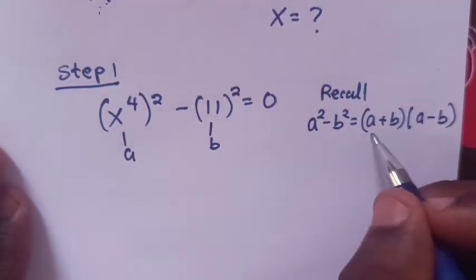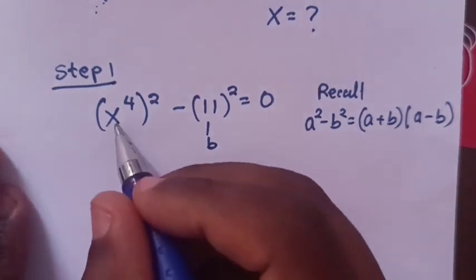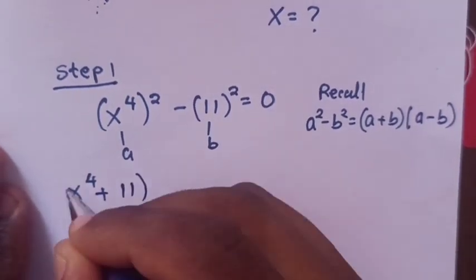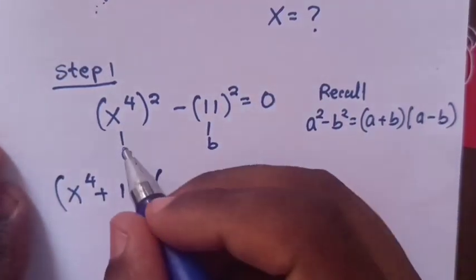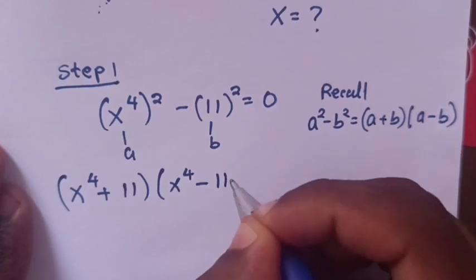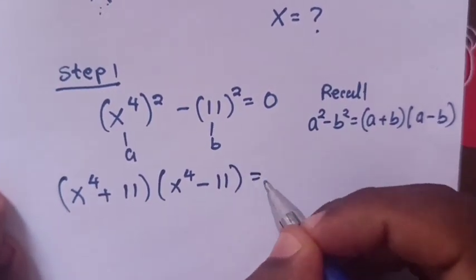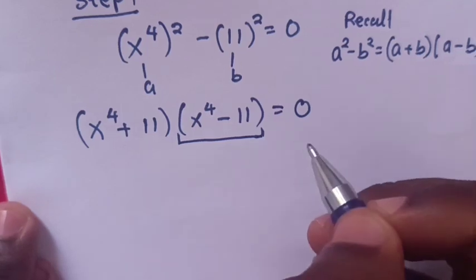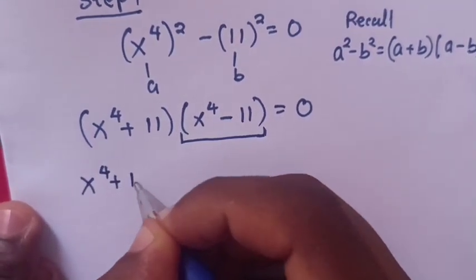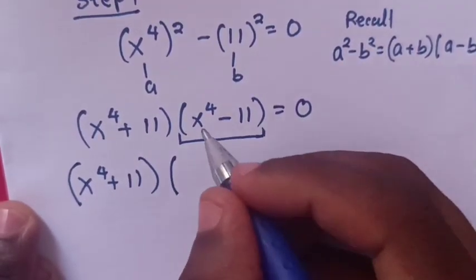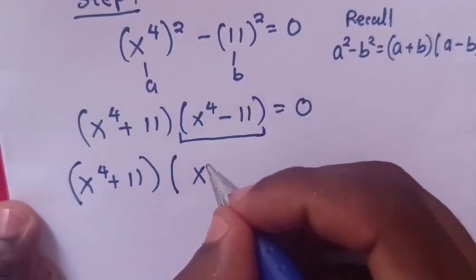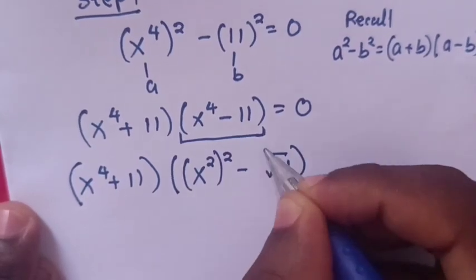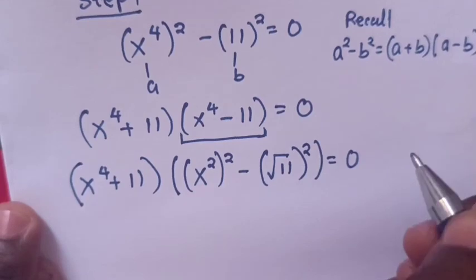Substituting these values using the rule, it becomes (x power 4 plus 11) times (x power 4 minus 11) equals 0. Now, x power 4 minus 11 can be written as (x squared) squared minus (square root of 11) squared, which equals 0.